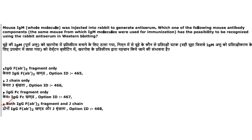Next: mouse IgM was injected into rabbit to generate antiserum. Which mouse antibody components could be recognized using the rabbit antiserum in western blotting? Both IgG Fab-2 fragment and J chain can be recognized, because the Fc region of IgM and IgG are different and the Fc region will not be recognized. The answer is option 4.